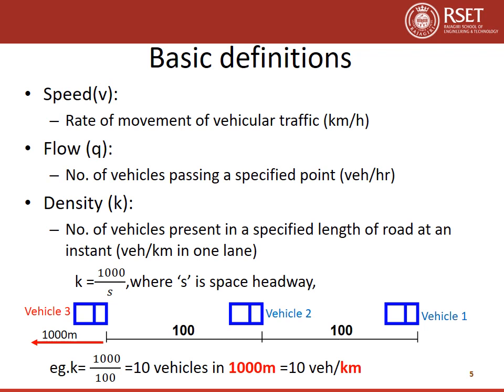These are some basic definitions of traffic flow theory. First is speed — the rate of movement of a vehicle or traffic, with its unit in kilometers per hour. Next is flow — the number of vehicles passing a specified point, expressed in vehicles per hour. Next is density — the number of vehicles present in a specified length of road at an instant, with its unit in vehicles per kilometer.